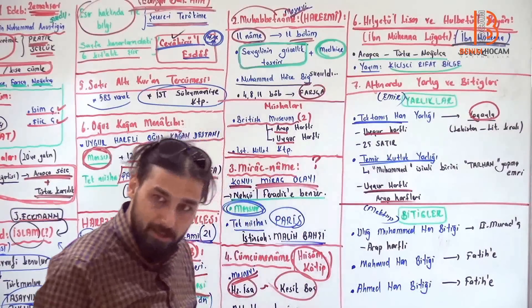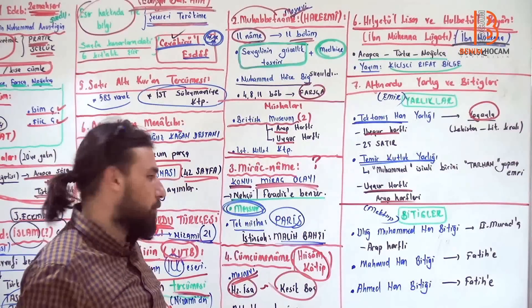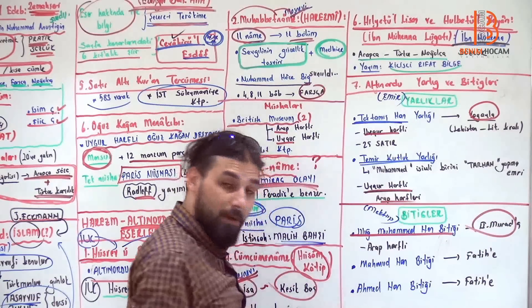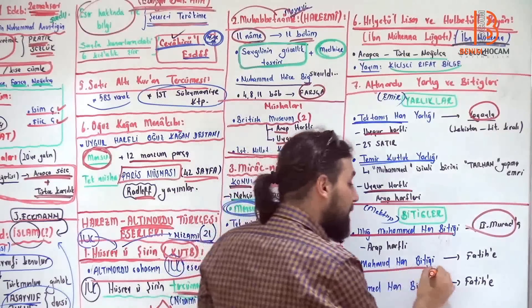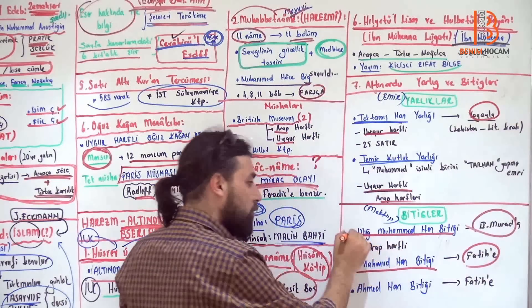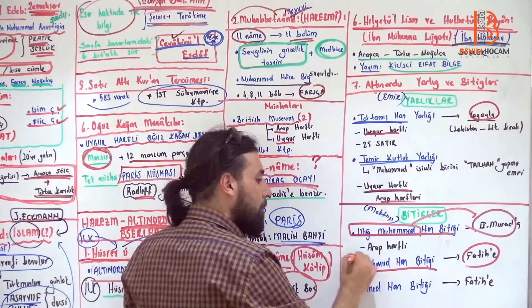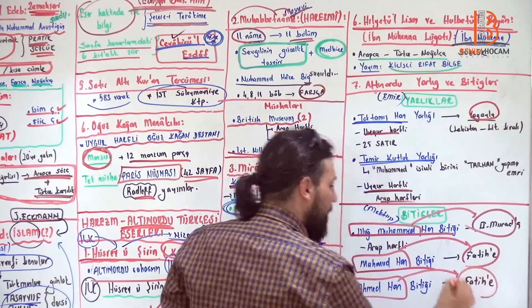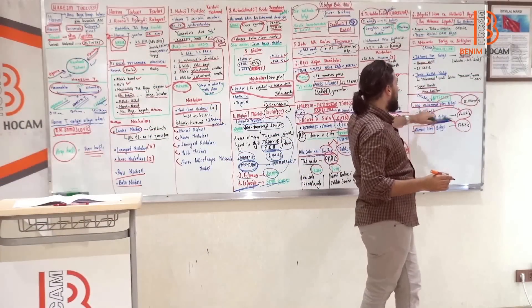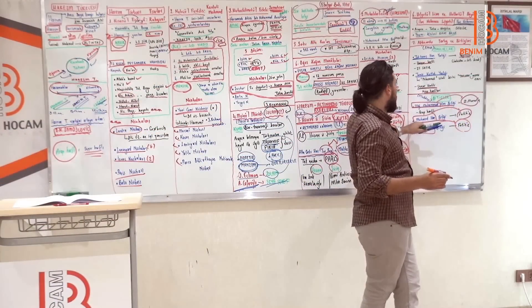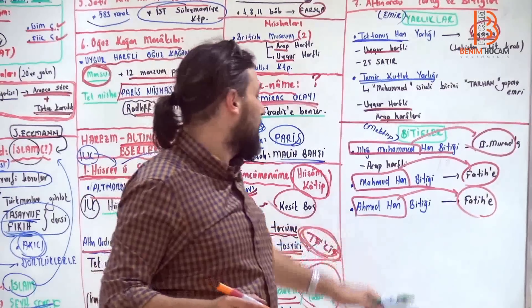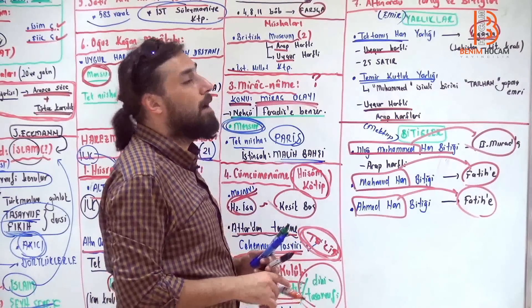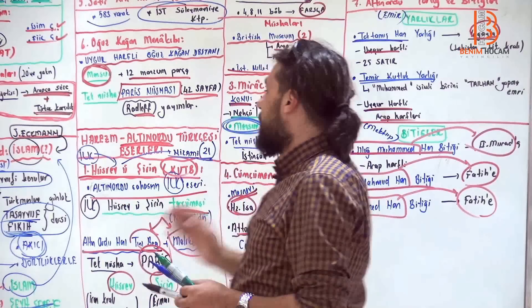Bak iki tane. Biri Toktamış Han'ın verdiği, biri de Temirkutluk'un verdiği. Bitik mektup var. Ulu Muhammed Han bitiği, İkinci Murat'a yazdığı Arap harfli. Mahmut Han bitiği. Mahmut Han Fatih'e yazıyor. Bak burada Ulu Muhammed ikinci Murat'a. Mahmut Han Fatih'e. Burada da Ahmet Han bitiği. Ahmet Han Fatih'e. Yani Altınordu hanı Ulu Muhammed ikinci Murat'a. Altınordu hanı Mahmut Han Fatih'e. Yine arkadaşlar Altınordu hanı Ahmet Fatih'e. Demek ki iki Fatih'e bir ikinci Murat'a da yazılıyor.